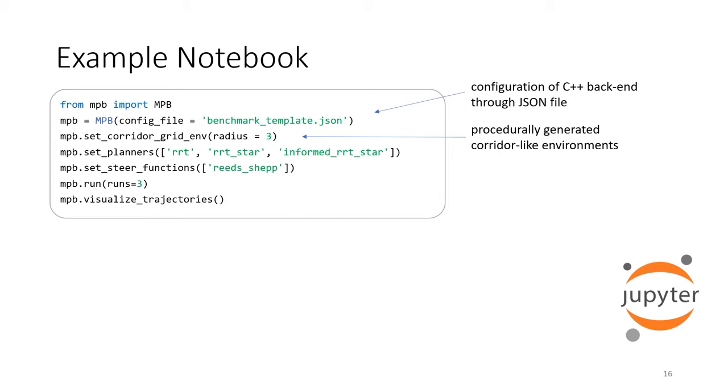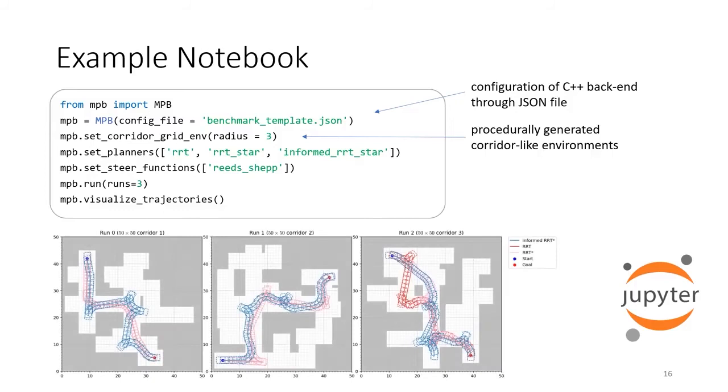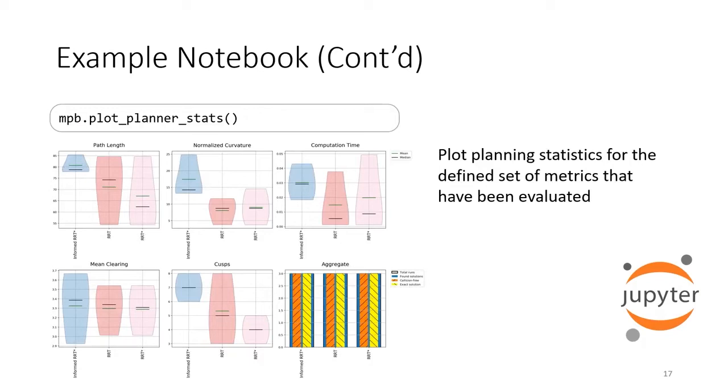With a single function call, we can also plot various statistics over all the runs. Here we plot the path length, normalized curvature, computation time, mean clearing distance, and the number of cusps. The bar plot shows the number of found, collision-free, and exact solutions.